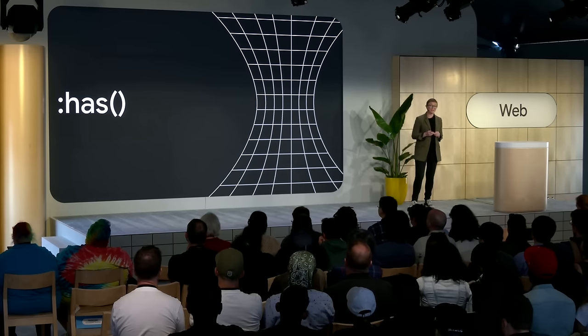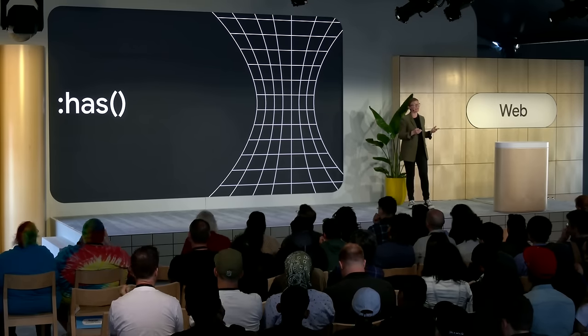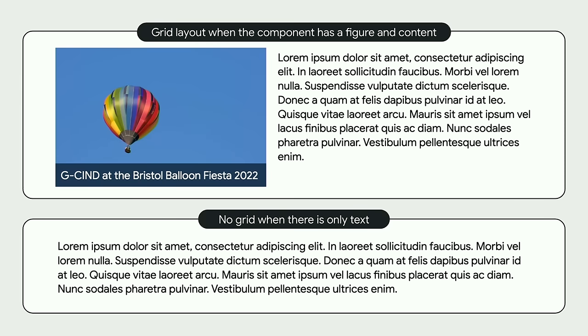From one impossible thing to another — the :has() selector gives us another long-requested feature: a parent selector, a way to select an element based on what's inside it. As with container queries, this is incredibly useful when creating reusable components, as you can create a single component that can adapt to what it contains. In this example, I have a simple card component: if the component has a figure and some content, display it as a grid layout with two columns. You can check if there's an image, and if there is, have it in two columns; if not, don't leave a space for the image. :has() can help you create more reusable components by using CSS to check for contents and styling accordingly.